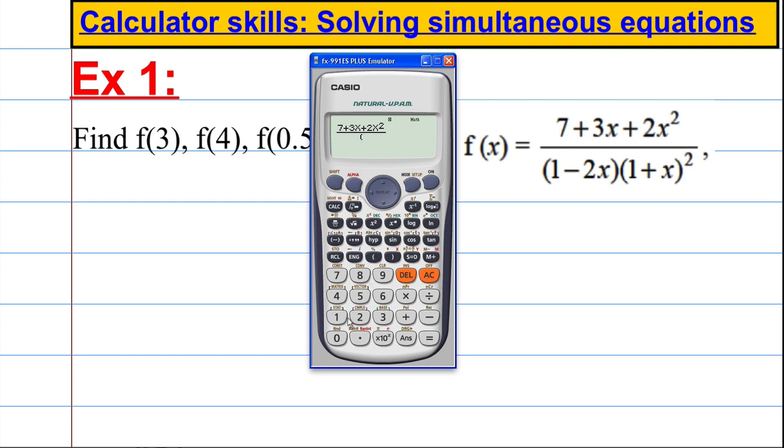And now we want to copy these brackets: 1 subtract 2, alpha-X, and then close the brackets. And then 1 plus X all squared: 1 plus alpha-X, close brackets, squared.